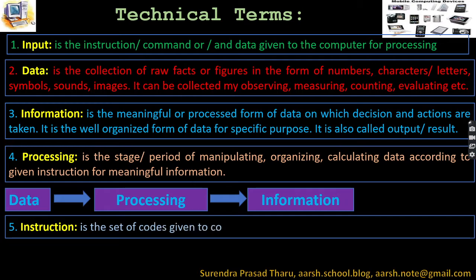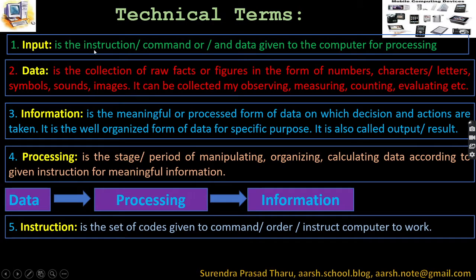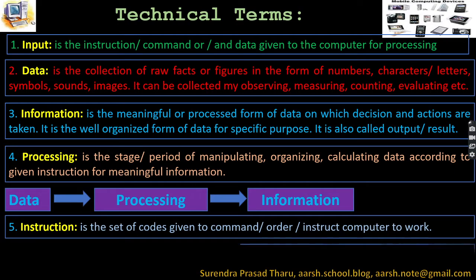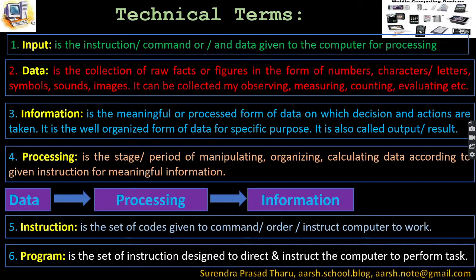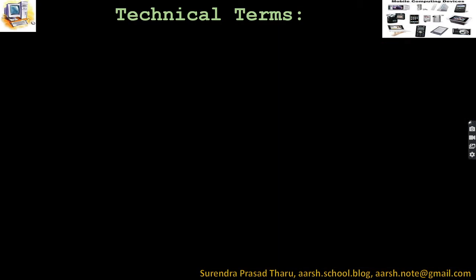Instructions is the set of code given to the computer — it is the order to the computer to make the computer hardware workable. Instructions are for the machine so it can understand and work accordingly. A program is the set of instructions, set of code, or set of orders designed to direct and instruct the computer to perform a specific task. That is the program.